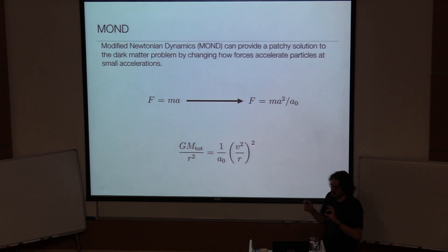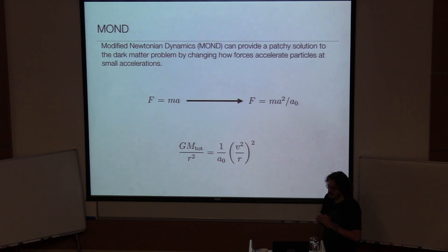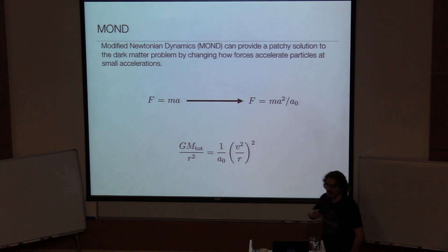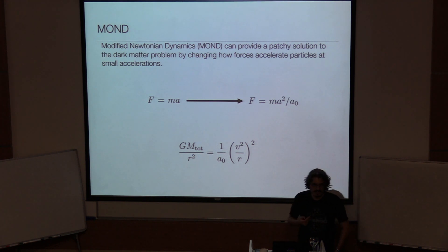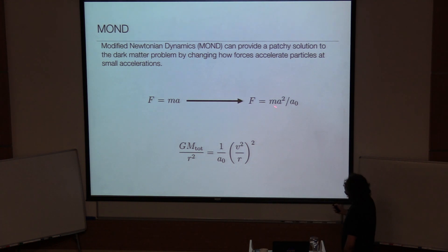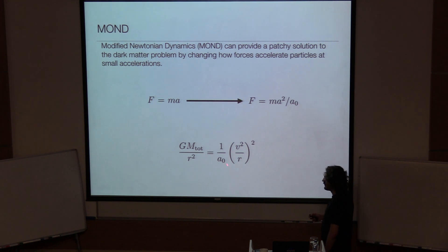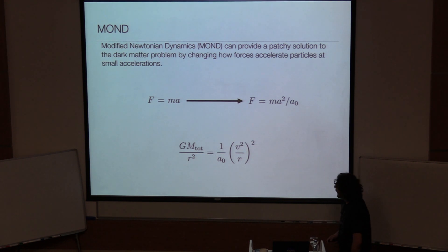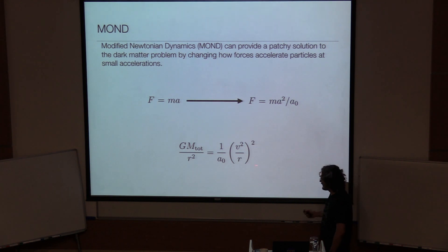Imagine the rotation curve problem. If you are very close to the center of the galaxy, this makes no difference because the acceleration is large enough. However, if you are at the outskirts of the galaxy, you are in the small acceleration regime. If you assume this, then GM/r² becomes equal to (1/a₀)·v²/r, and the r² dependence cancels and you get a flat rotation curve by design.